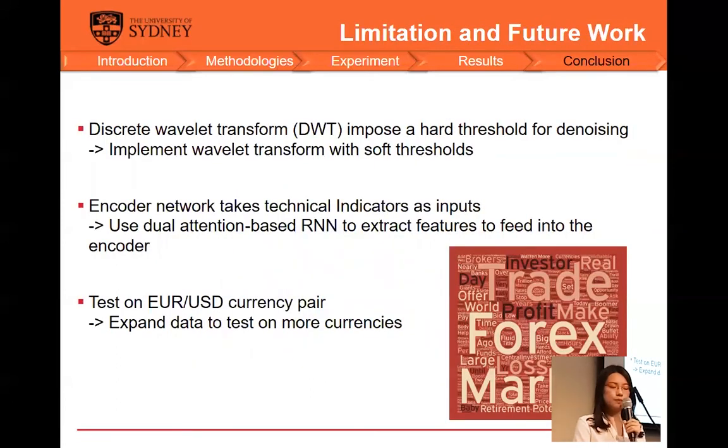Although the proposed model achieved good results, there are some limitations of the project. Firstly, the discrete Wavelet transform cannot guarantee excellent denoising results because it uses the hard threshold to decompose the data, which could cause either some useful signals being removed or some disturbing noises being reserved. The Wavelet transform with softer thresholds could be the future direction of the analysis. In addition, instead of using technical indicators as the input for the encoder network, we can consider using another deep learning network to extract some interesting features from the original market data and then send to the encoder. Lastly, in the experiment, I only tested the proposed model on the EURUSD currency pair. The future work should involve examining the model on more currency pairs.